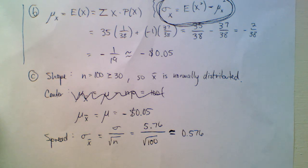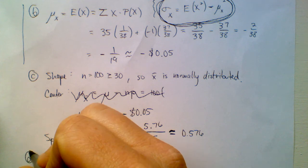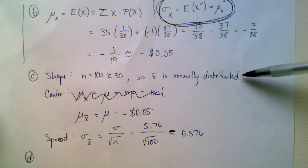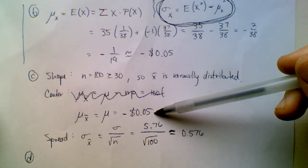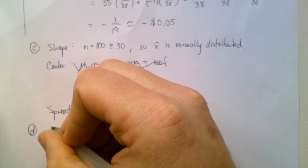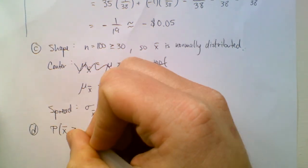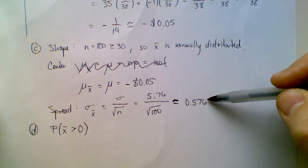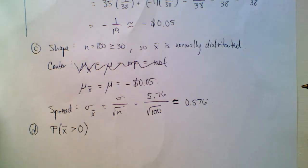The rest of the problems you can handle. Part D asks: what's the probability of being ahead after playing the game 100 times? That is, what is the probability that the sample mean x-bar is greater than 0 for n equals 100? You know that x-bar is normally distributed, so use the normal calculator in StatCrunch — use negative 0.05 for the mean, 0.576 for the standard deviation, and find the probability that x-bar is greater than 0.